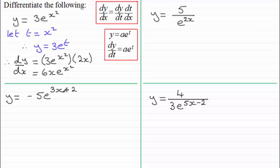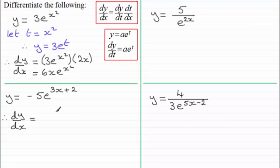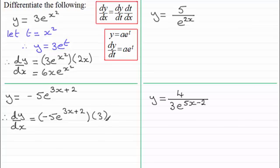For this one, we let t be 3x plus 2. Going straight to dy by dx using the chain rule: dy by dt gives minus 5e to the power t, where t is 3x plus 2. We multiply by dt by dx — differentiating 3x plus 2 with respect to x gives 3. Cleaning this up gives a final result of minus 15e to the power 3x plus 2.